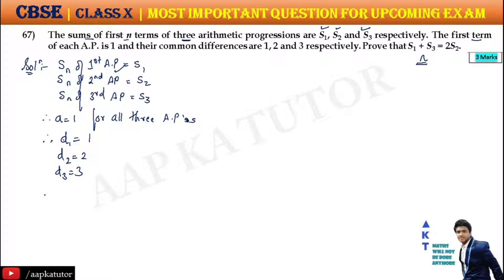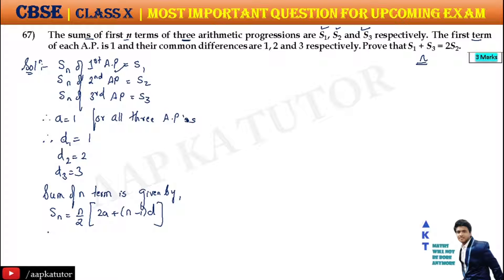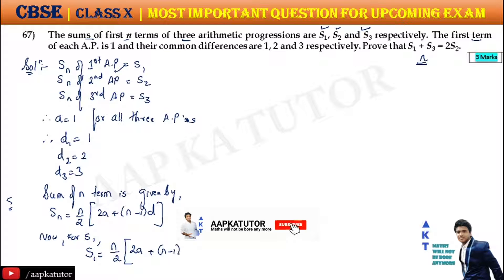First, we will write the sum of n terms formula: S = n/2 · (2a + (n−1)·d). For S1, note that n is the same for all APs. So S1 = n/2 · (2a + (n−1)·D1).